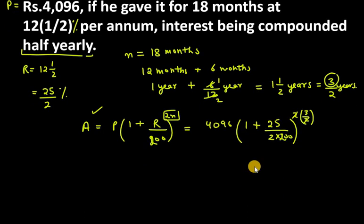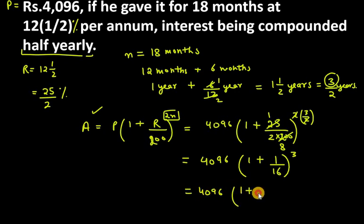Now we solve this. This will be 4,096 times (1 plus 25 over 200). We cancel to get 25 goes 8 times in 200, so we have 8 into 2 which is 16 below, raised to 3. So 4,096 times (1 plus 1 over 16) raised to 3. When you take LCM of this, this will be 17 over 16 raised to 3.